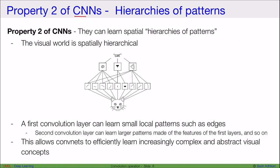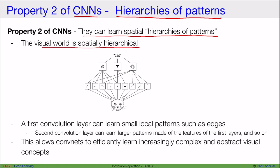The next property of convolutional neural networks is the ability to learn hierarchies of patterns. They are designed to mimic the visual world, which is spatially hierarchical. For example, a picture of a cat consists of semi-circles, lines, and curves. A cat can be broken down into eyes, nose, and ears, which are further broken down into low-level features like lines and curves.